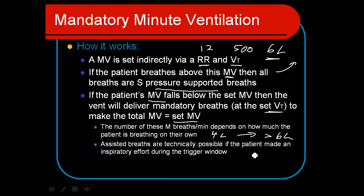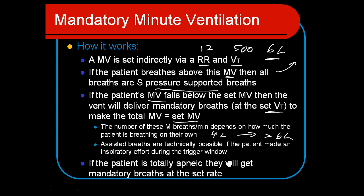You can get anything from zero to 12 breaths per minute to augment or mandate the patient's minute ventilation. If the patient is totally apneic, they'll receive the full mandatory breath rate — in this case, 12 breaths per minute.